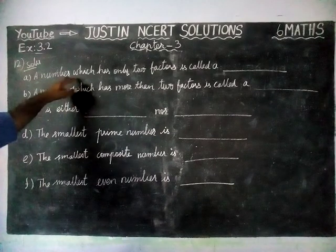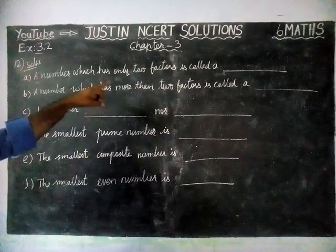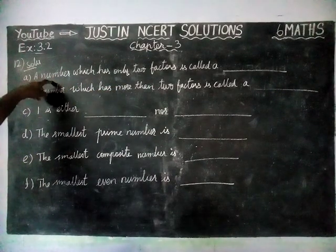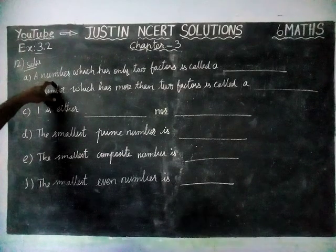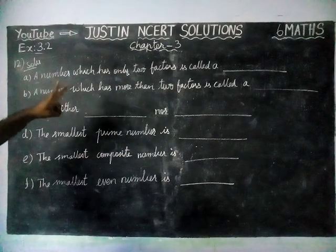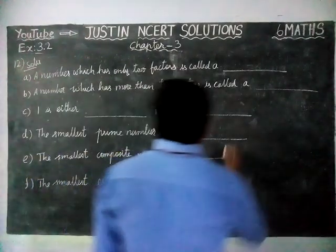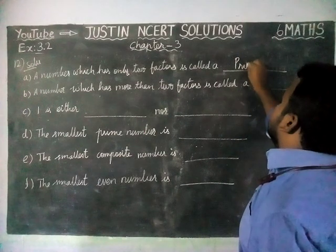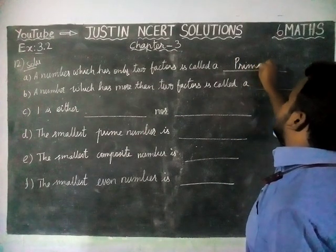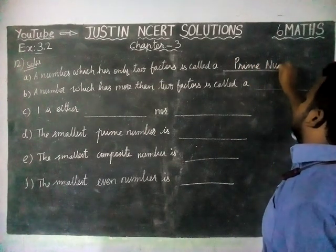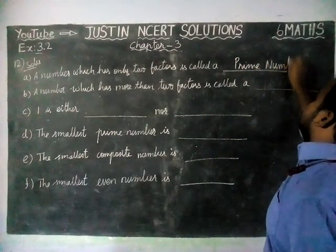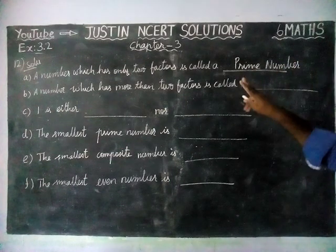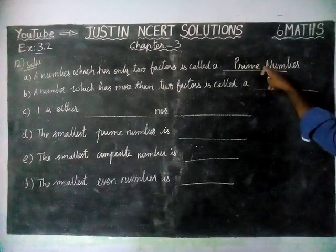A number which has only two factors is called — we already saw it in the introduction video itself. If a number has only two factors, it is called a prime number.